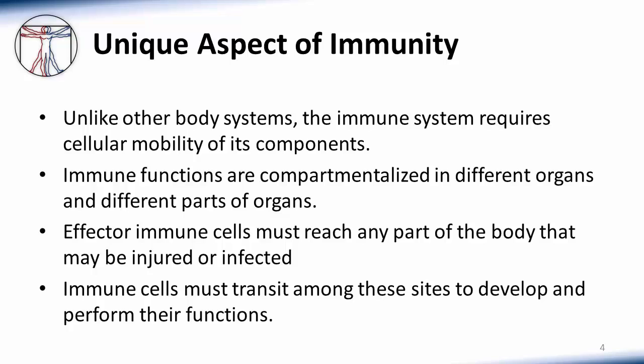One thing that sets the immune system apart from all other body systems is that the cells of the immune system move around the body. This cell movement is vital to immune system function. Different immune functions occur in different organs or parts of organs, and the effector cells that are generated need to reach sites of infection. The right cells need to get to the right place at the right time.